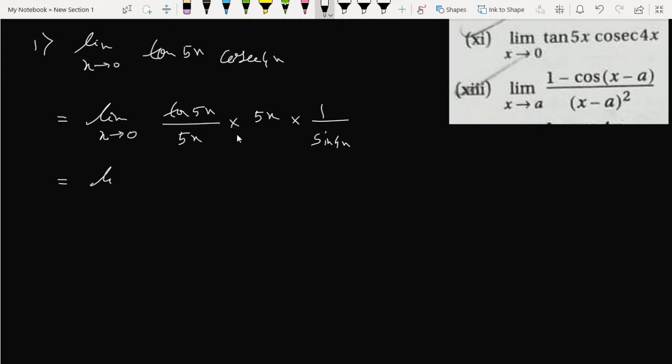So we are breaking the limit into two parts. Here we can write limit x tends to 0, 5 is multiplying both sides, it doesn't change anything.